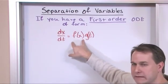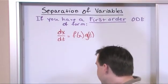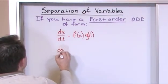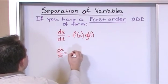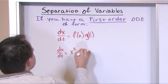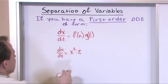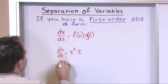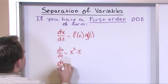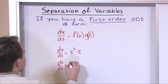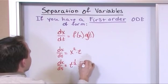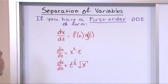So this f of x could be, we could have dx/dt, it could equal to x squared times time. This is a function of x, this is a function of t. Our differential equation could be dx/dt is equal to t to the one-half times the square root of x. So you see, here we have a function of t, and here we have a function of x.